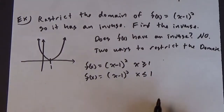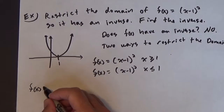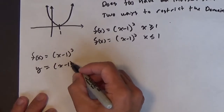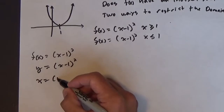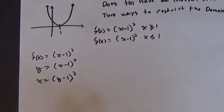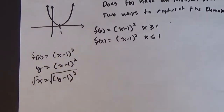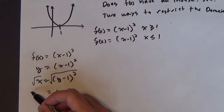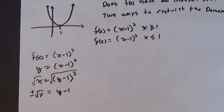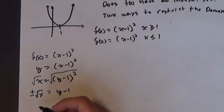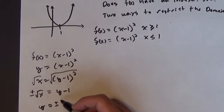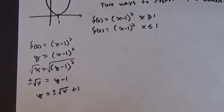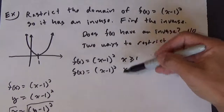Let's go through the process of finding the inverse. Starting with y = (x − 1)², we interchange x and y: x = (y − 1)². Taking the square root of both sides — on the left we get ±√x, on the right we get (y − 1). Solving for y gives y = ±√x + 1. Which sign we use depends on which domain restriction we applied.